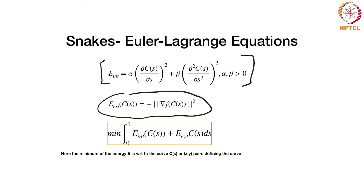The regularization term has two parts. The first derivative term, delta C over delta s squared, ensures you do not have very short discontinuities in your curve and also ensures a tight or short-length curve. It does not have short discontinuities and the length of the curve is shortened — this is the length-shortening term. The second term is the second derivative, which makes sure the curve is not too wriggly. You do not want abrupt changes in the first derivative, so this second term ensures your curve is smooth.